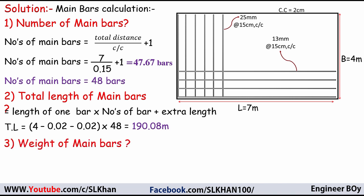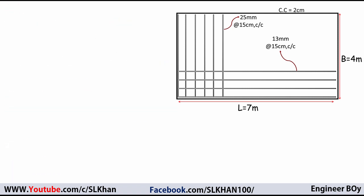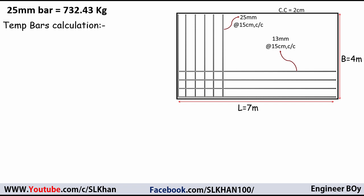Now for the weight of main bars using the formula W = d² / 162.198 × L. The diameter d is 25mm, so: 25² ÷ 162.198 × 190.08 = 732 kg. This means we need to order 722 kg of 25mm bars.